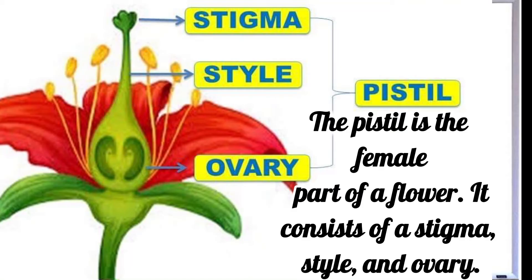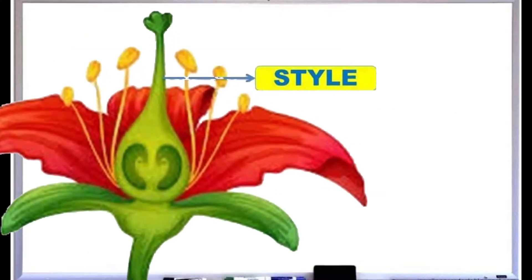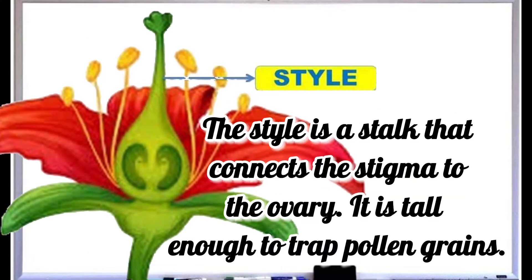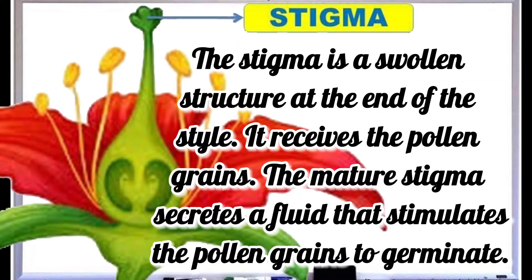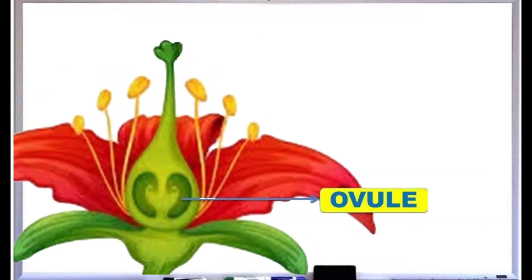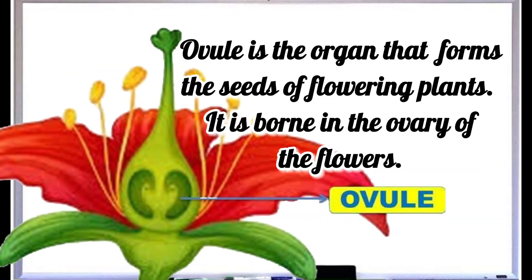Pistil: the pistil is the female part of a flower. It consists of a stigma, style, and ovary. The style is a stalk that connects the stigma to the ovary; it is tall enough to trap pollen grains. The stigma is a swollen structure at the end of the style — it receives the pollen grains.